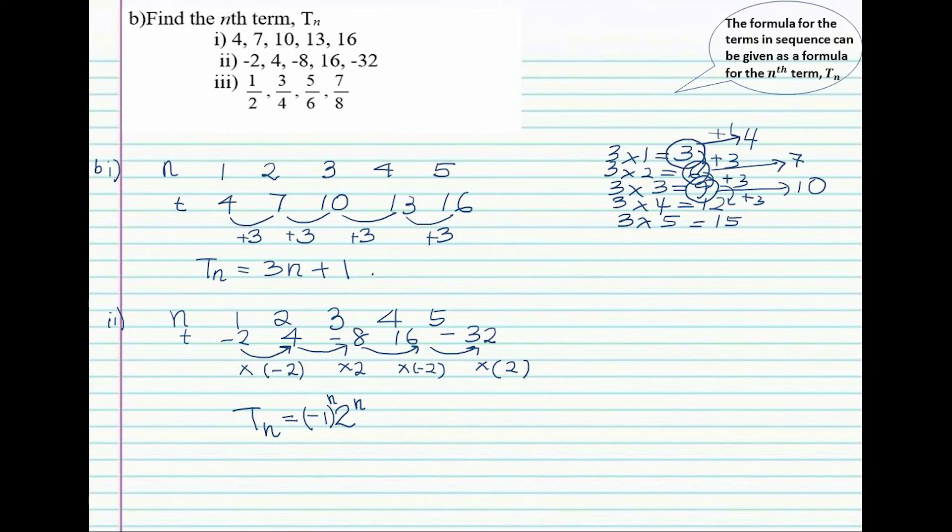Last one, number 3, we have 1 over 2, 3 over 4, 5 over 6, 7 over 8. If you realize on the top of each fraction, the numerators are all odd numbers: 1, 3, 5, and 7 are odd numbers. 2, 4, 6, and 8 are even numbers.